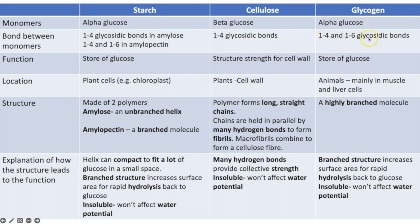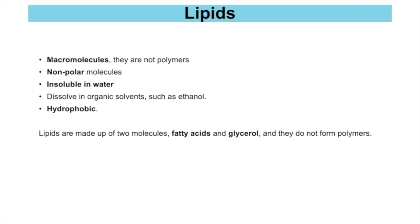Glycogen is also made of alpha glucose and is similar in structure to amylopectin in starch. It has both 1-4 and 1-6 glycosidic bonds, but far more 1-6 bonds than amylopectin, making it even more highly branched. The greater number of branches means a greater surface area for rapid hydrolysis back into glucose for respiration. As the glucose store in animals — mainly in muscle and liver cells — glucose can be rapidly released when an animal needs to run.